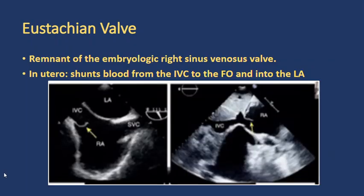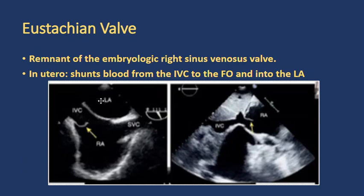Second, we have the eustachian valve, which is a remnant of the embryological right sinus venosus valve. It extends right out of the IVC as a c-shaped structure into the RA — essentially a valve. In utero, it allows the baby to shunt blood from the IVC directly through the left atrium, bypassing the pulmonary circulation, which is immature and closed off in utero. This allows oxygenated blood to be pumped to the rest of the body and get oxygenated within the placenta.